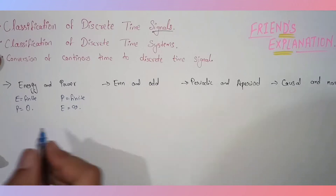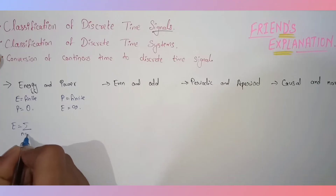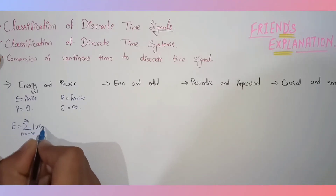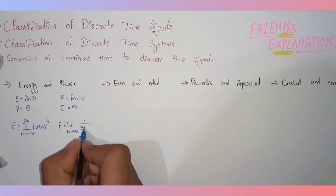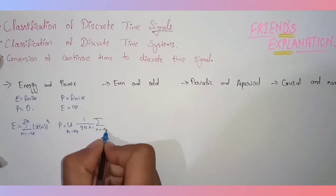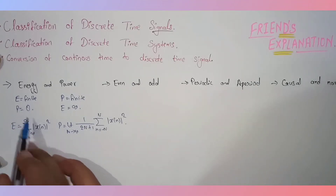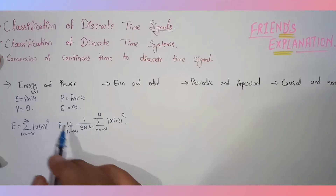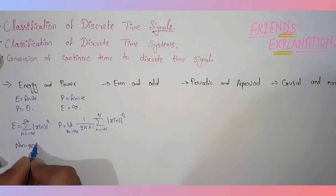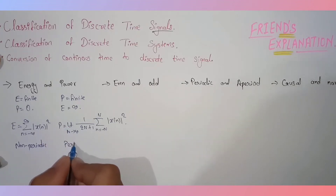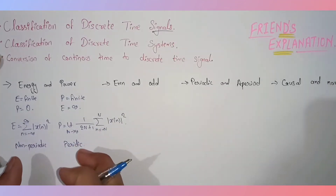The equation for energy is: summation from n equals minus infinity to infinity of the signal magnitude squared. For power, we write: limit as N tends to infinity of 1 divided by (2N+1), summation from minus N to N of the signal magnitude squared. Energy signals are generally non-periodic, and power signals are generally periodic.